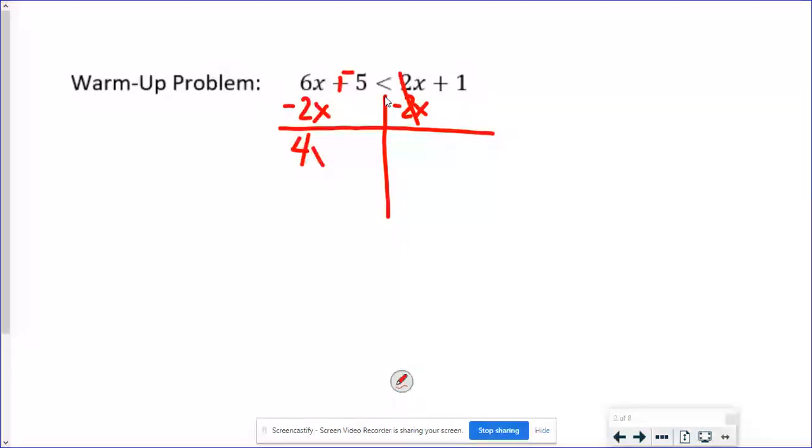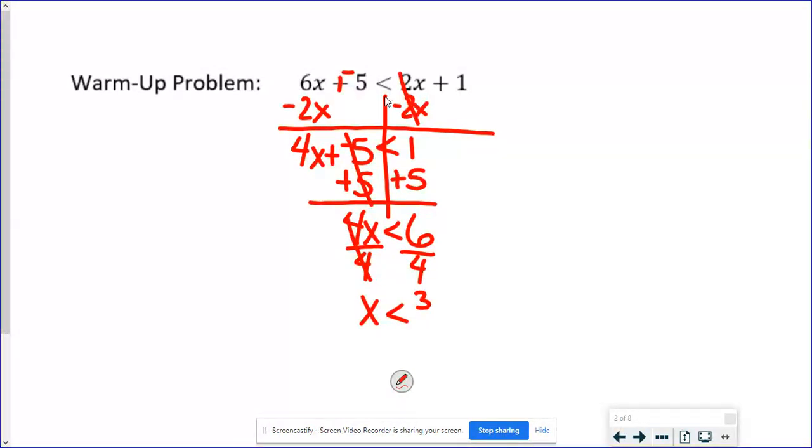So I'm going to have 4x plus the negative 5, or we could have just left minus 5, is less than 1. So I would add 5 to both sides. And I get that 4x is less than 6. And don't freak out right now just because that's going to be a fraction. It's okay. We would want to simplify that. We would want that to be 3 over 2, or you could write it as 1 and a half or 1.5.